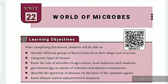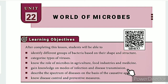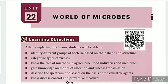The lesson-level learning objectives are: identify different groups of bacteria based on their shape and structure; categorize types of viruses; know the role of microbes in agriculture, food industries, and medicine; gain knowledge on modes of infection and disease transmission; describe the spectrum of diseases on the basis of causative agents; and know disease control and preventive measures.